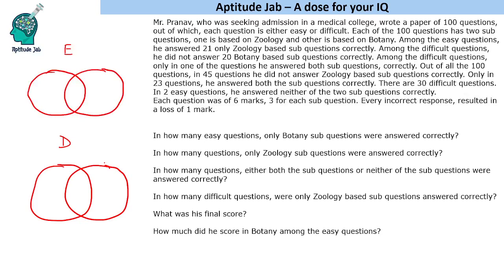Let us say one circle is zoology and the other is botany. Going through the statements: among the easy questions, he answered 21 only zoology-based sub-questions correctly. So in the easy questions Venn diagram, we place 21 in the only-zoology region, representing the correct answers.